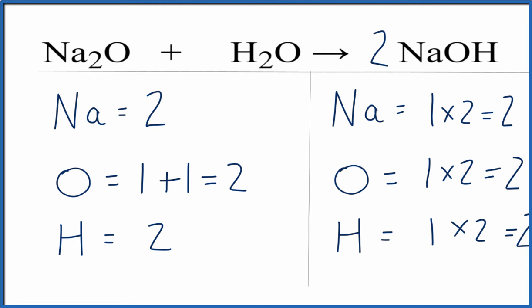And everything on each side of the equation is balanced and we're done. That's the balanced equation for sodium oxide plus water yields sodium hydroxide.